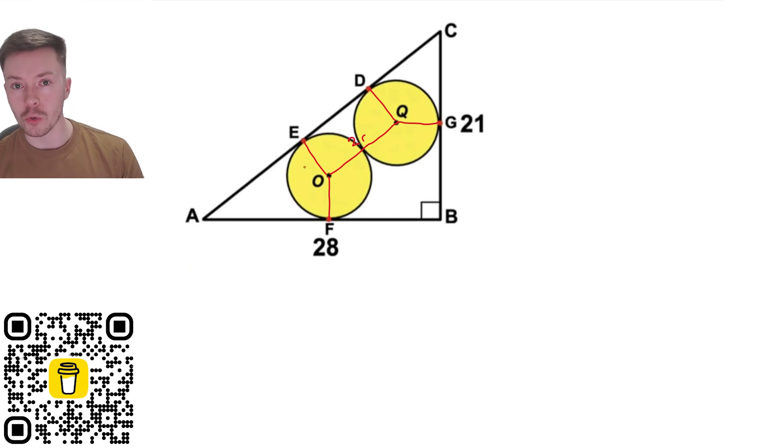Now what I do know because of circle theorems is that these lines here must be equal because two tangents that meet a point are equal length that's one of your circle theorems and these must also be equal up here at the top.